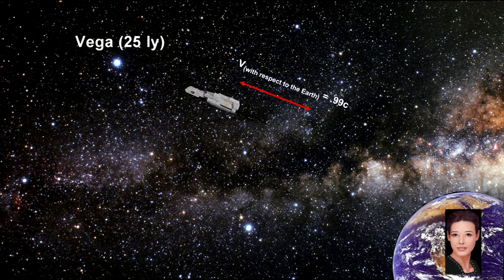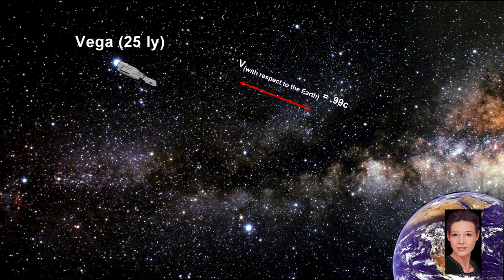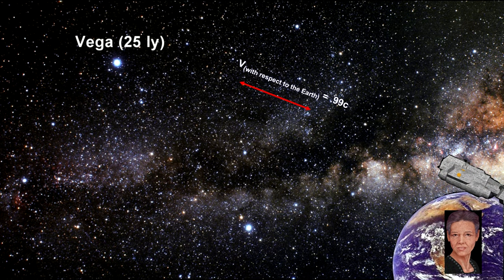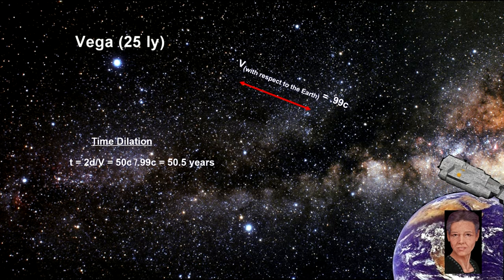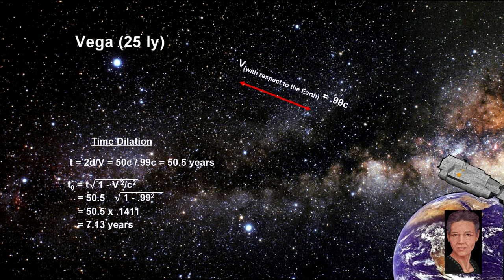The person on the Earth sees the trip taking just over 25 years, and the trip back taking the same amount of time. She is over 70 years old when the ship carrying her twin sister arrives back on Earth. But she also observes that her twin's clock ran a good deal slower than hers during the trip. Her twin is aging more slowly than she is.